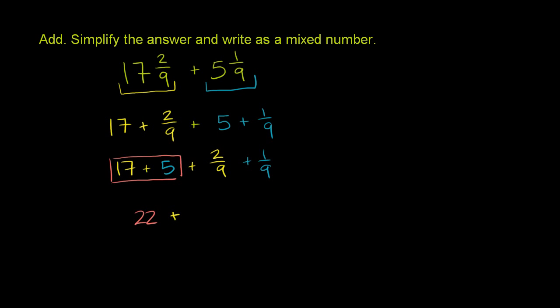Now what is 2/9ths plus 1/9th? Well, they have the same denominator, so it's going to be over 9. And then you add the numerators. 2 plus 1 is 3. So it's 22 plus 3/9ths.